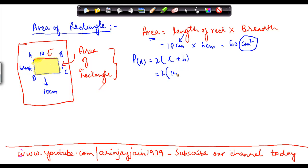So 2 times (10 plus 6) which equals 2 times 16, equals 32. And we write this as cm, not cm². So the area is always mentioned as a square unit, whereas the perimeter comes as cm.